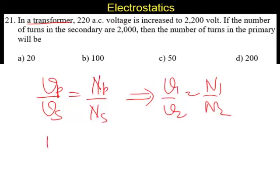Now we will go for here. Number of turns in the primary is going to be number of turns in the secondary into Vp by Vs.